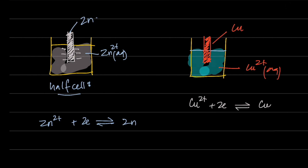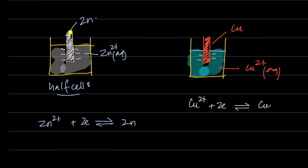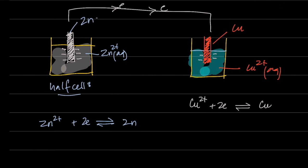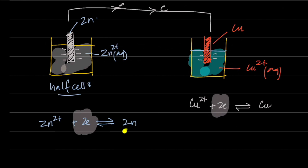Since electrons flowed from zinc to copper when the cells were connected, zinc must have had more negative charge — more electrons on the rod. Electrons, like pressure, go from an area of higher negative charge to lower negative charge. This implies zinc metal ionized more than copper, meaning both equilibria were not equally balanced. This difference is what we use to rate everyone's reactivity — who is ionizing more.